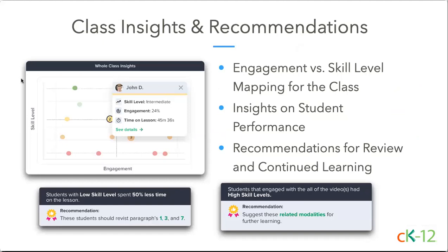Last year you started seeing our class insights and recommendations. Our initial insights included skill level and time spent on a lesson. Now we've moved to full class mapping of student skill levels compared to engagement with a particular lesson — factoring in time spent, exploration of interactives, inline questions answered, and more, so you can quickly see effort and performance for your class as a whole. If you click on an individual student, you can drill down into how and where they spent their time. Beyond the whole class graph, CK12 offers insights and recommendations: if multiple students struggled with the same question, we'll point those out so you can start class with a review.